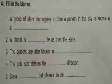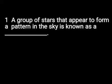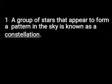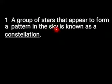A. Fill in the blanks. First: A group of stars that appear to form a pattern in the sky is known as? The correct answer is constellation. A group of stars that appear to form a pattern in the sky is known as constellation.